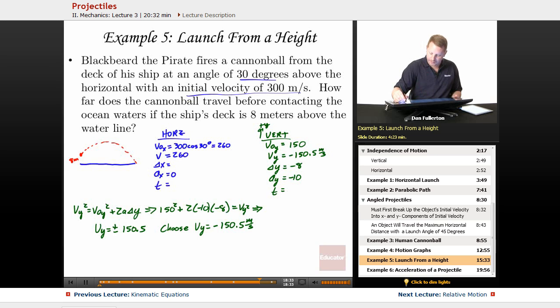Finding the time, then, ay equals delta vy over t, change in velocity over time. Therefore, t is going to be equal to delta vy over ay, or the final negative 150.5 minus 150 over ay, negative 10, or roughly 30 seconds.